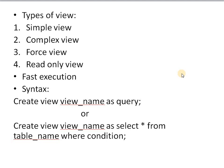The third type is a force view. If we create a view on a particular table but that table is not available in your database, that view is known as a force view — the table doesn't exist in the database, but we create a view on it anyway. The fourth type is a read-only view. A read-only view is one on which only read operations can happen; you can only read from it. Views are also fast to execute compared to database tables, because tables are stored in memory but views are not, saving execution time.